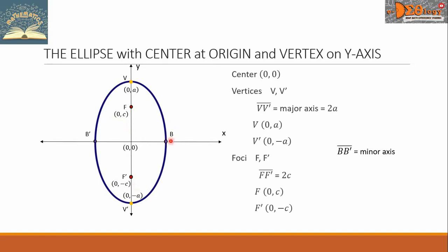Next are the points b and b'. These are the points where the ellipse touches the x-axis. The line segment connecting these two points, we call that the minor axis. Let us assign the value 2b for this length. The coordinates of the endpoints of the minor axis are (b, 0) and (-b, 0) respectively.